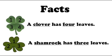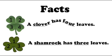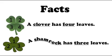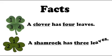Facts. A clover has four leaves: one, two, three, four. A shamrock has three leaves: one, two, three.